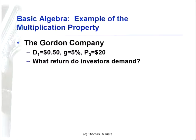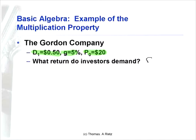Those are three algebra rules that will come in very handy as we go through this class. Going back to the Gordon company — a very handy example — suppose we want to know what return investors demand. So what do we know? We know next period's dividend, the growth rate, and the price. Because we're working with dividends, growth rates, and prices, this cues us to the Gordon Growth Model. What we're after is the return investors demand R.